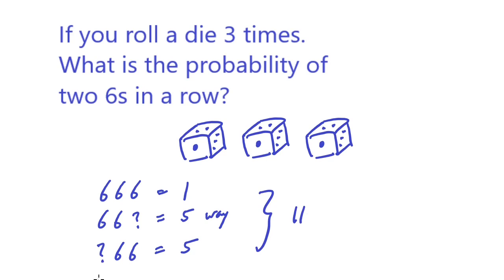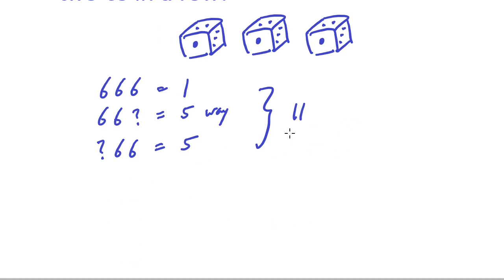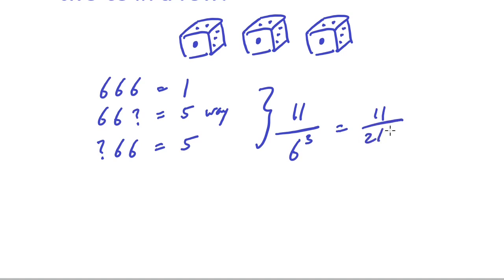This gives you a total of eleven ways, which goes in the numerator. The denominator is six times six times six — six to the third power. So the answer is eleven over two hundred and sixteen.